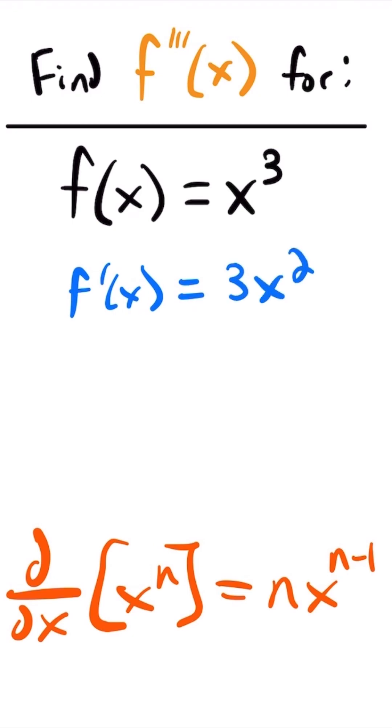Then if we take the derivative again, we will have that f double prime of x, the second derivative, is equal to 6 times x to the power of 1, but we don't need to write that 1.